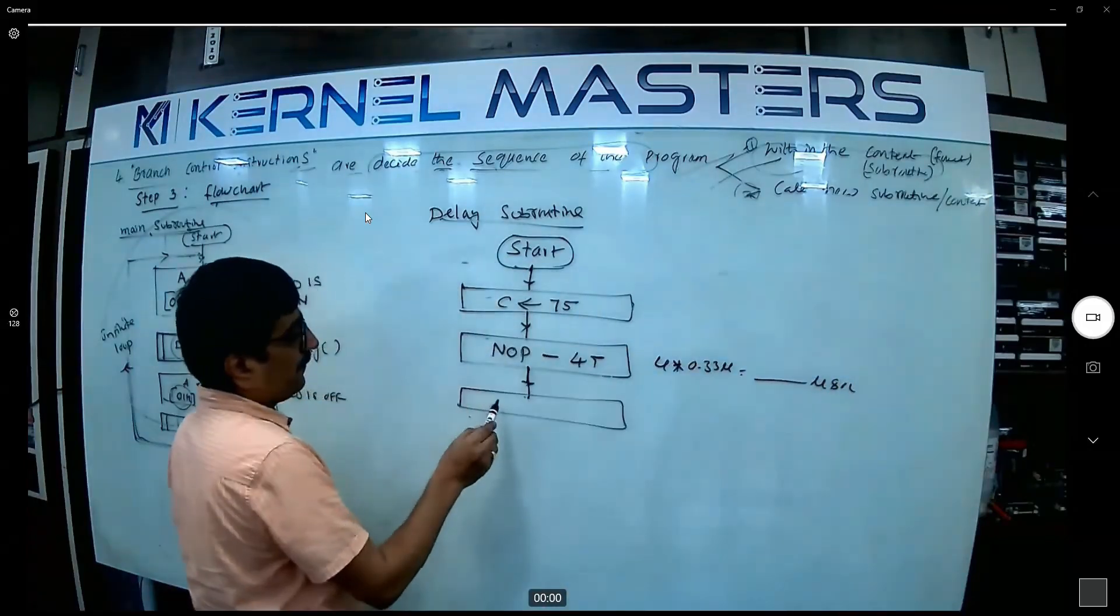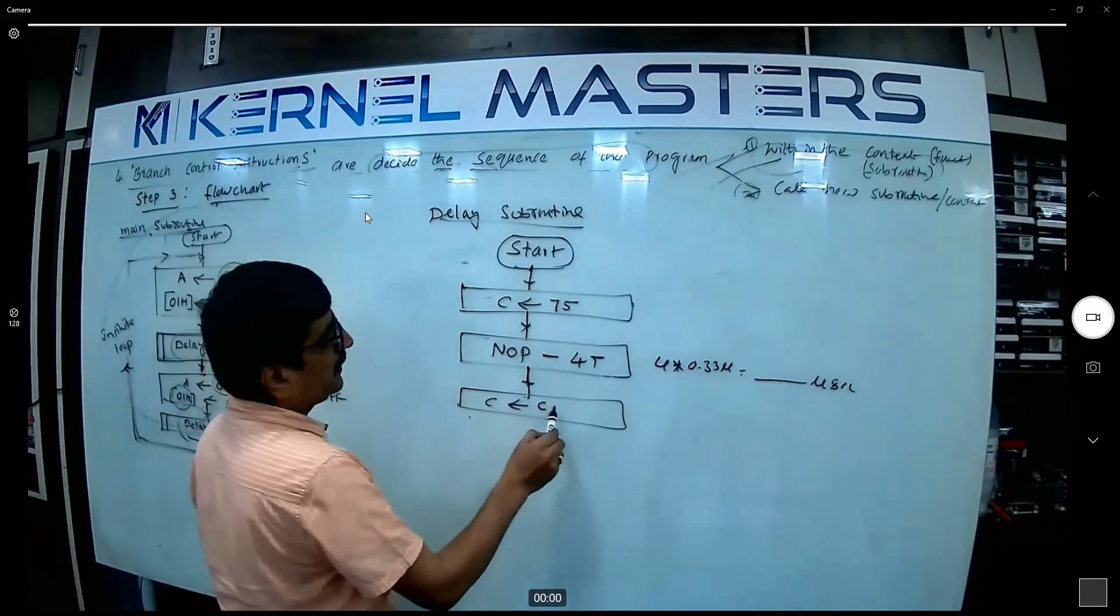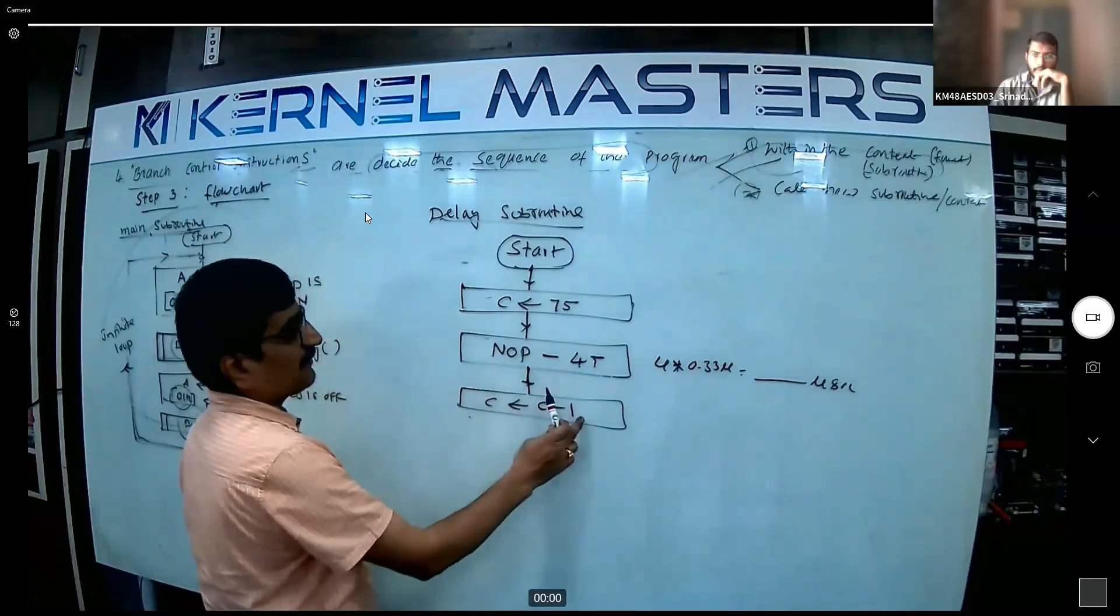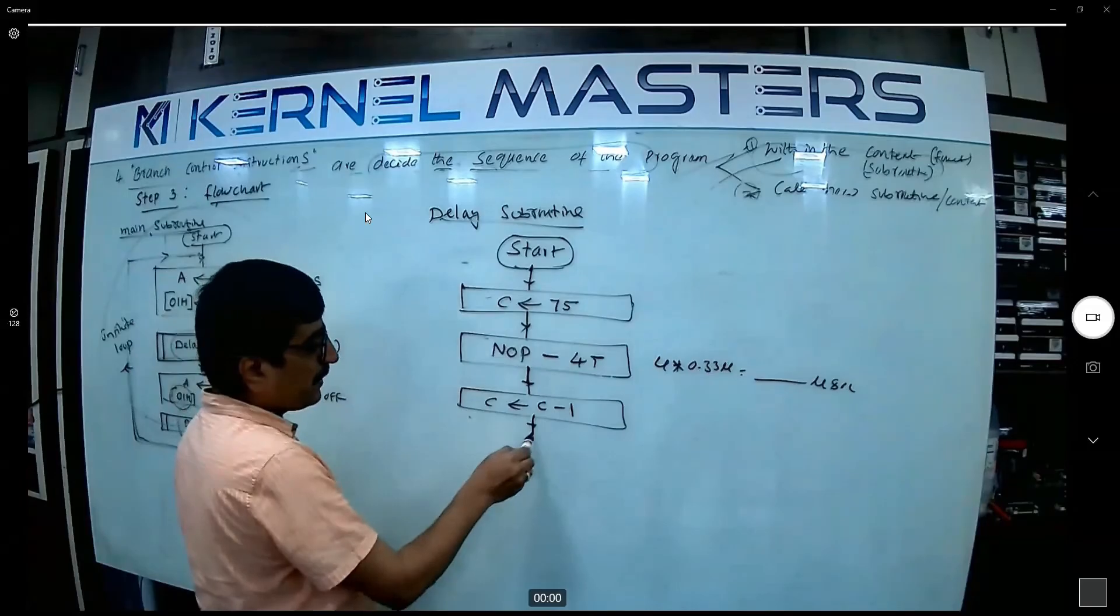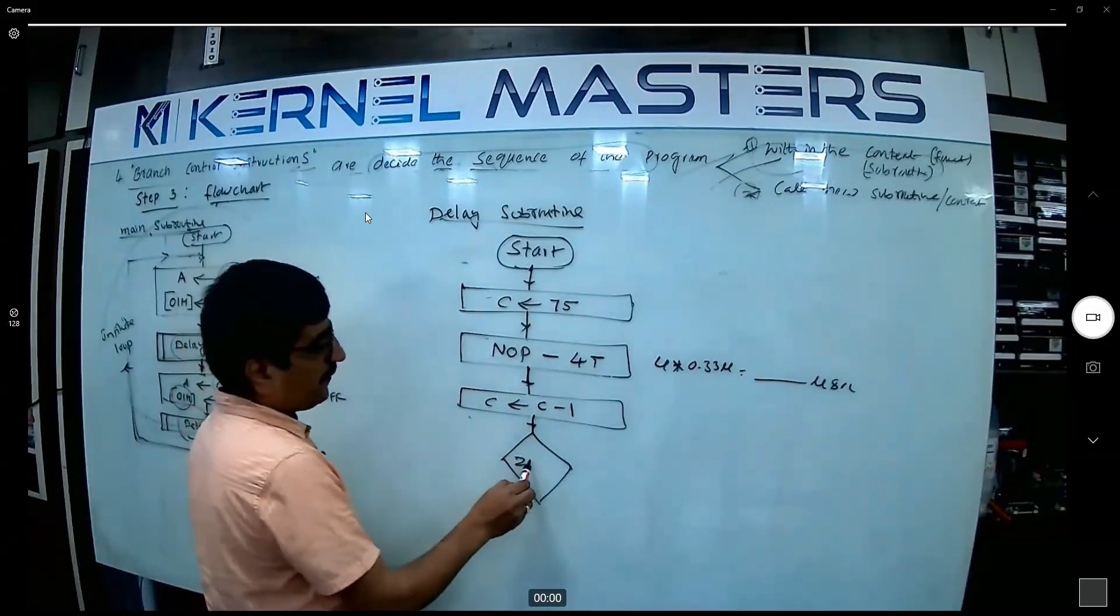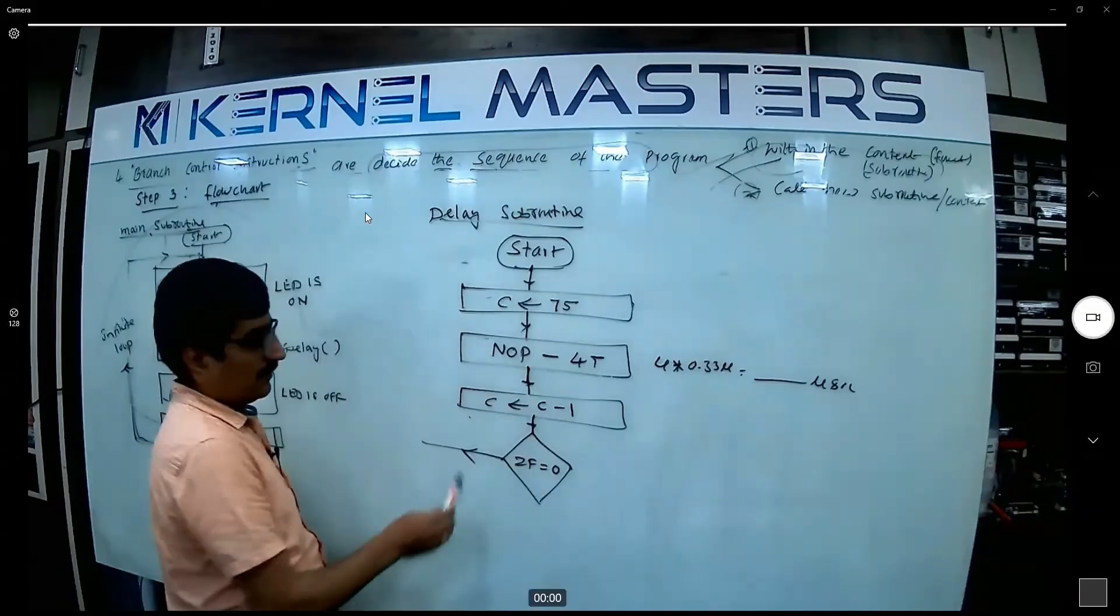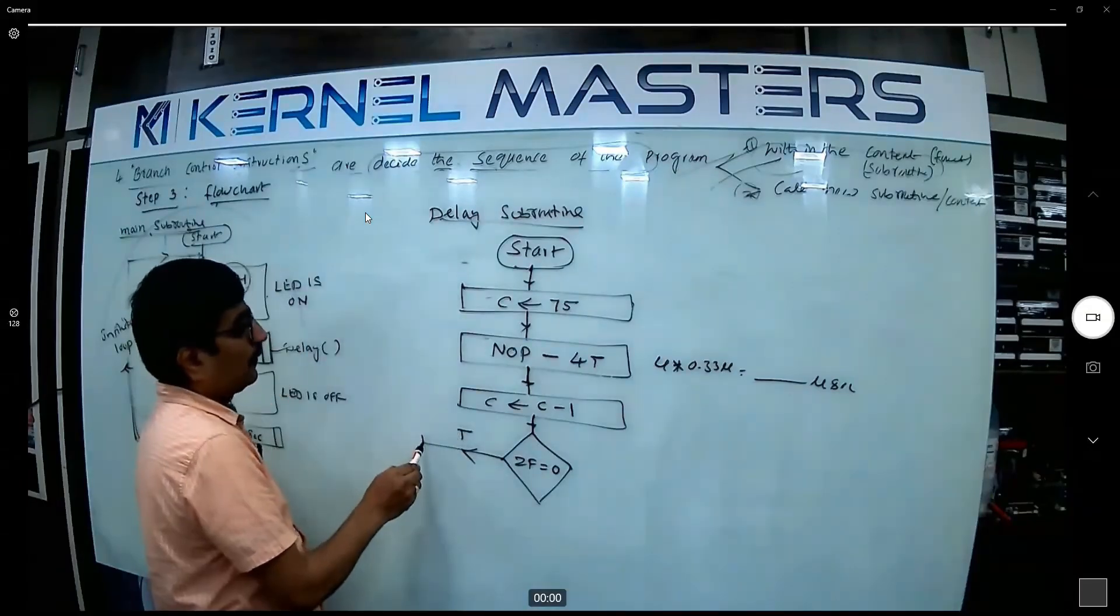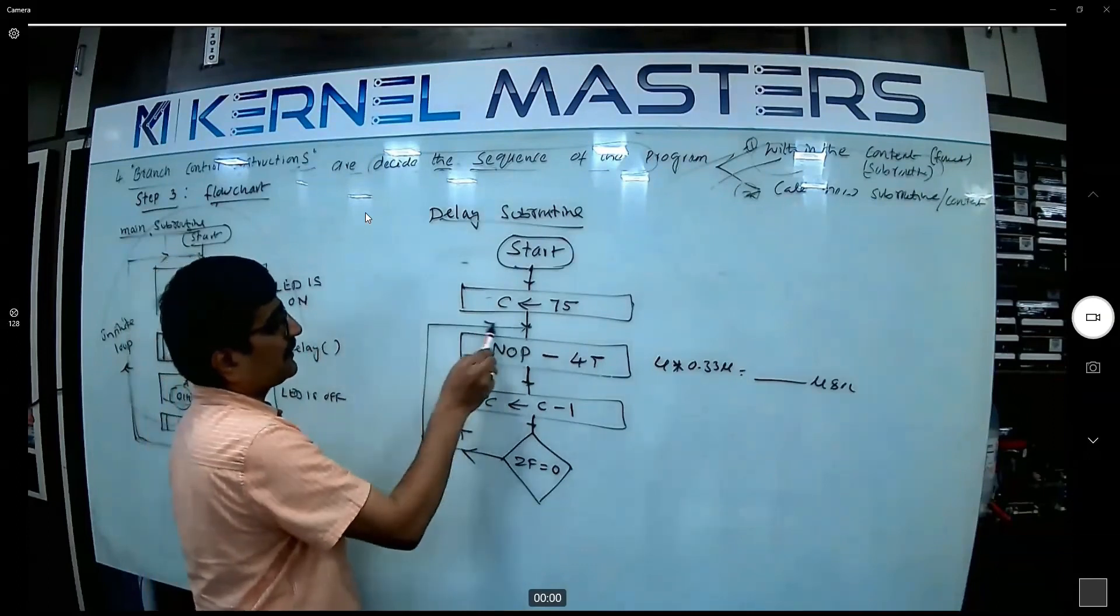C value - what? Decrement or not. No, 75 minus 1, tell me 74. Okay, and now here, here, tell me design making. Jump on zero. Tell me zero. The meaning of true - go to here, yes or no?